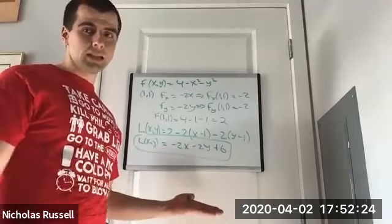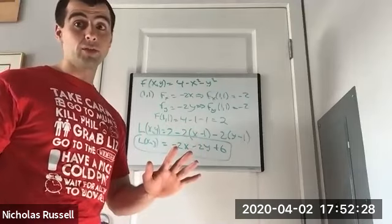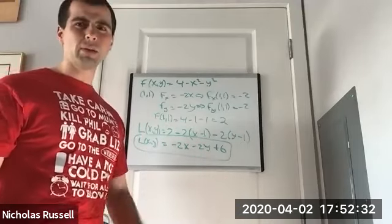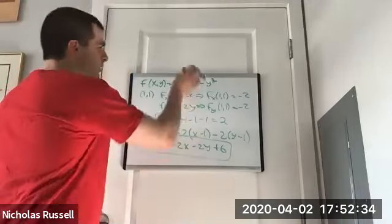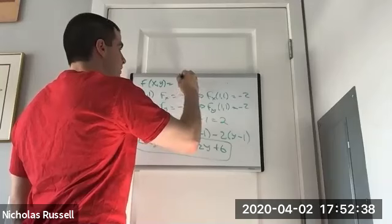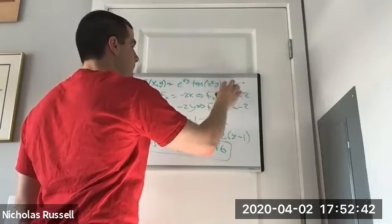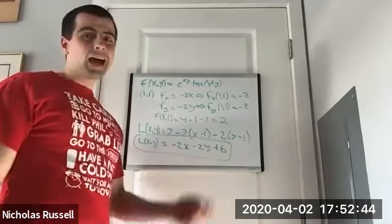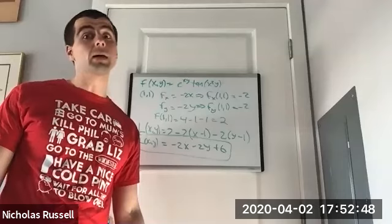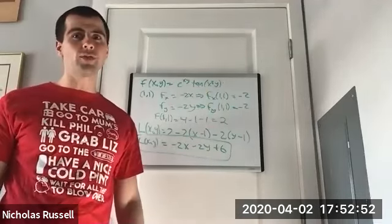This might not seem like a lot with a simple function, but imagine a really complicated function — something like e^(xy) · tan(x²y). This is very hard to evaluate numerically. I honestly don't know what that looks like or what a specific value would be.